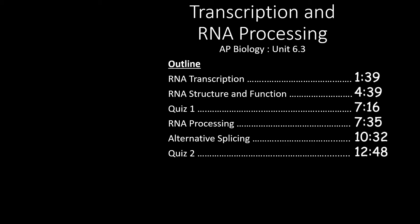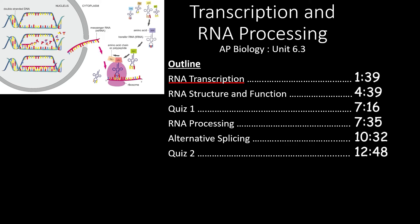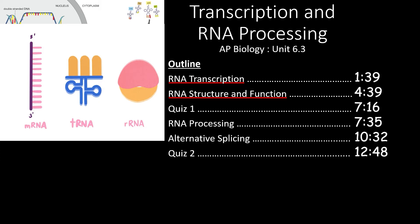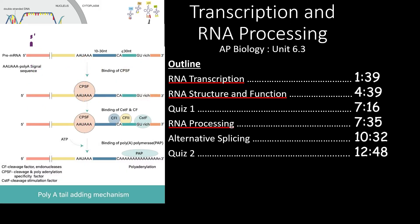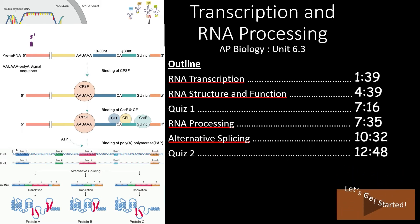In this video, we'll take a look at section 6.3 of the AP Biology Curriculum. We'll start by reviewing RNA transcription before we look at different RNA structures involved in the process of creating proteins. After the first quiz, we'll dive into RNA processing and the process of alternative splicing that can add variation to a population. If you only need to review one of these sections, skip forward to the times outlined here. Otherwise, let's get started.